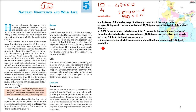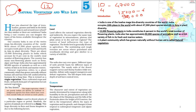We need to understand what we mean by vegetation and natural vegetation. All the content — whether it may be bush, small plants, or trees — combined, they are called vegetation. In a certain region, a plant community that has grown naturally without human aid is called natural vegetation.